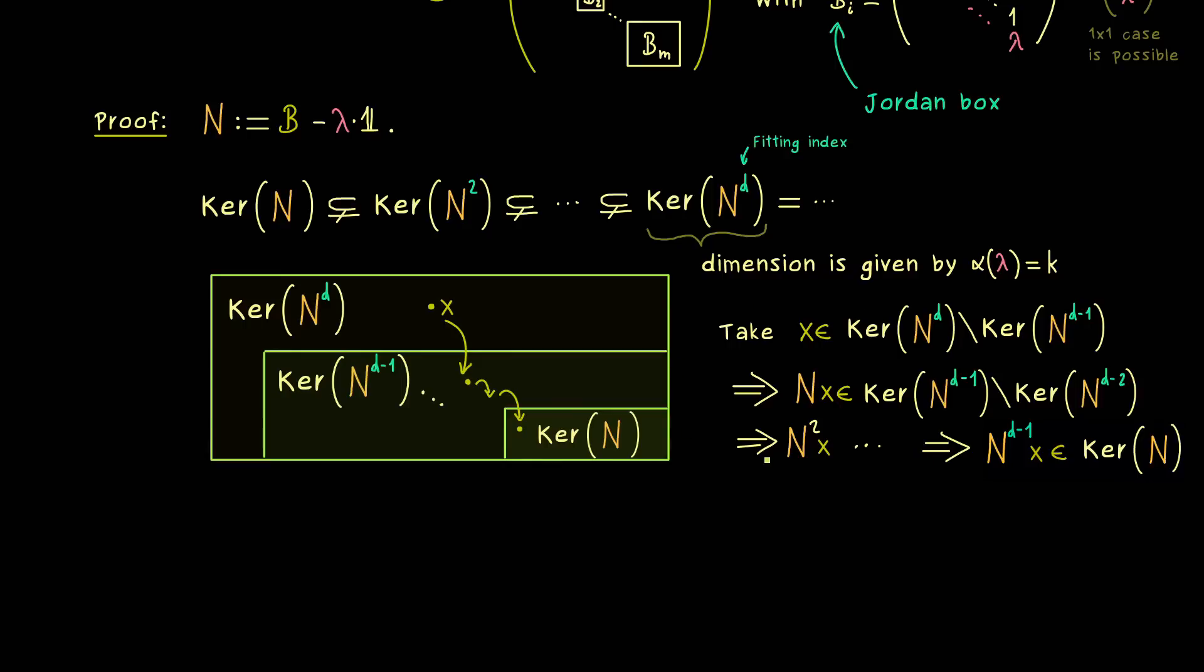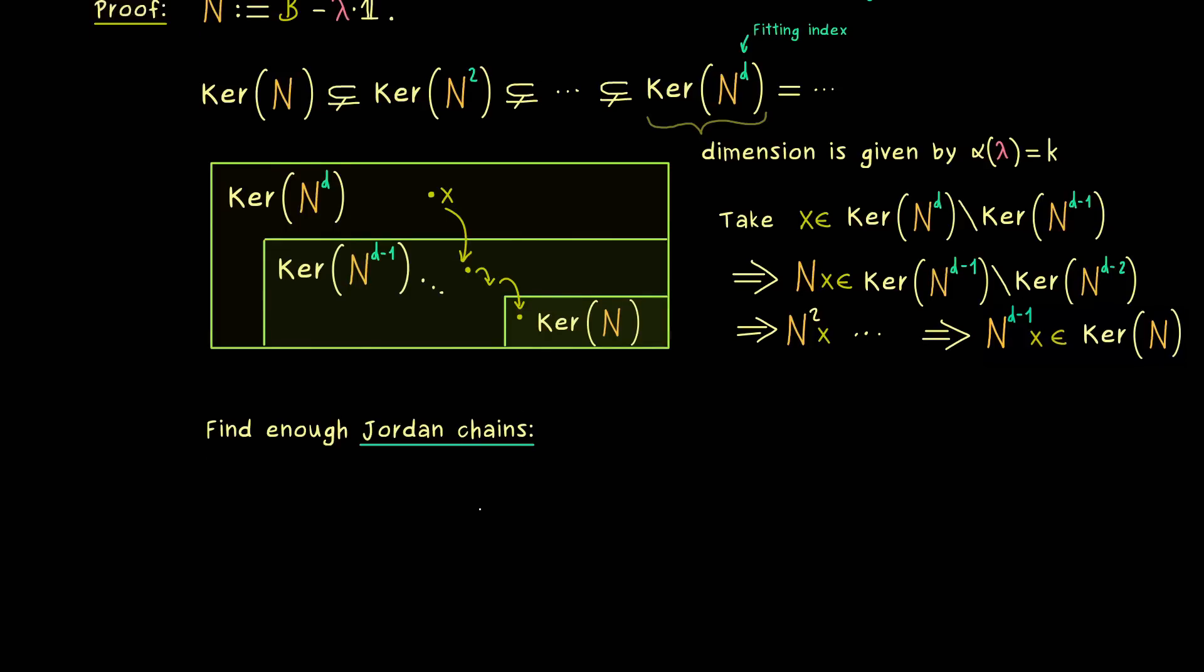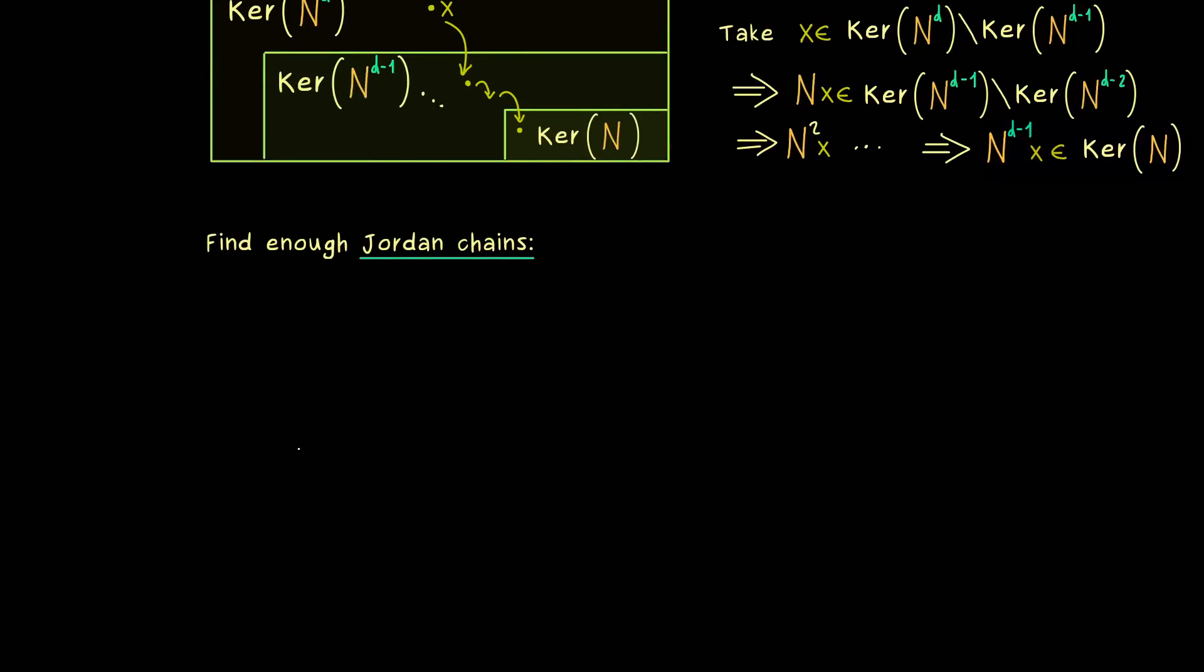In other words, with this construction, we already find d vectors for our bases. And moreover, because of the connection of the vectors, you might already see that the matrix representation is given by such a Jordan box. So this implies that we only have to find enough chains to find the whole bases. And there you might already guess, this is what we call Jordan chains. And how this exactly works, I can show you in a picture again.